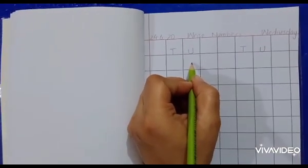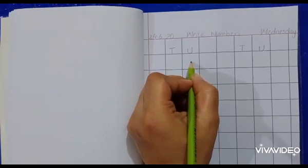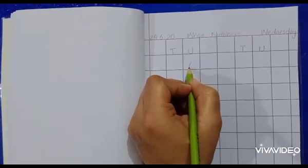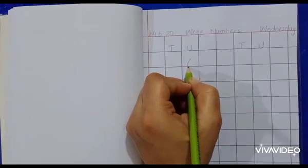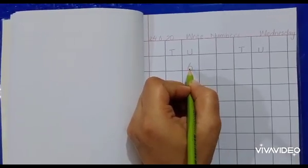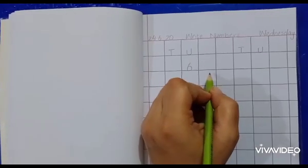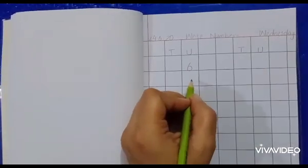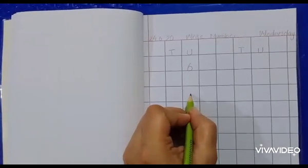Now below U we will write number six. Make a slant line, touch the line, and turn around. It's number six. Here, now it's your turn to write.